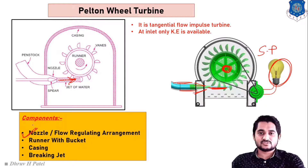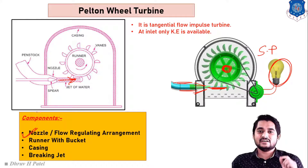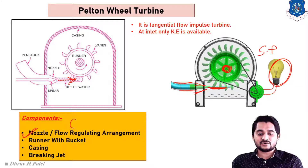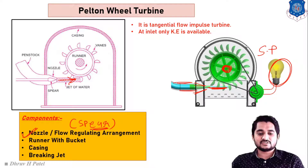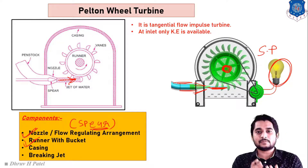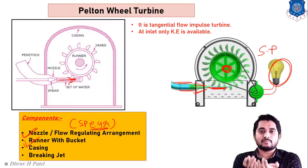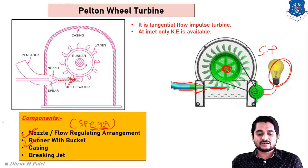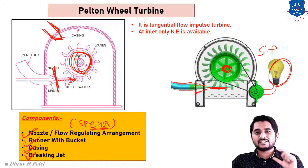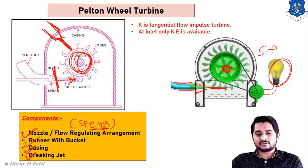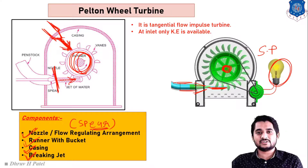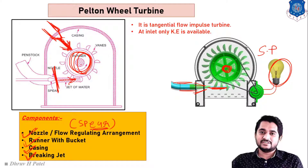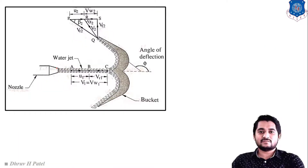The basic components of the Pelton wheel turbine are: first, the nozzle — used for increasing kinetic energy and flow regulation via a spear; second, the runner with buckets — the blades are double hemispherical bucket-shaped; third, casing — used for safety purposes; and fourth, the braking jet — if we want to stop the wheel suddenly, a braking jet is applied in the opposite direction of rotation.